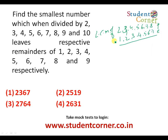The common pattern is that each remainder is exactly one less than the divisor, so the common deficit is 1. First, find the LCM of 2, 3, 4, 5, 6, 7, 8, and 9, which equals 2³ × 3² × 5 × 7. Calculating: 8 × 9 = 72, 72 × 5 = 360, 360 × 7 = 2520. Since the common remainder deficit is 1, we subtract: 2520 − 1 = 2519. This is the answer using the methodical LCM process.